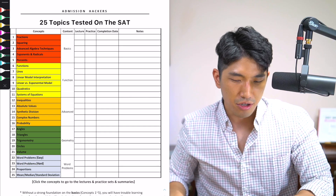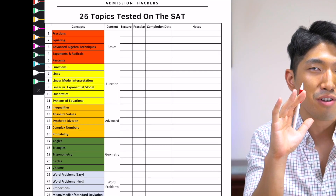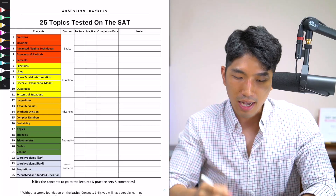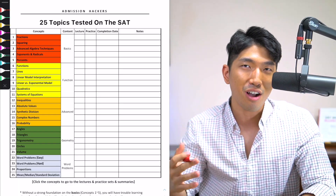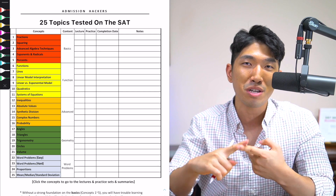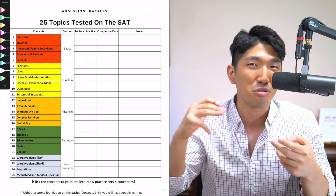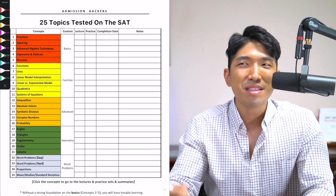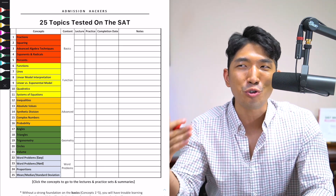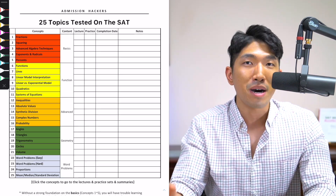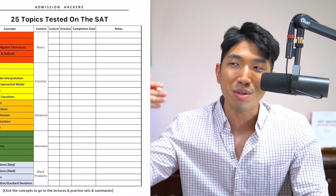When it comes to the math section, what you first have to know is that there are only 25 different concepts tested on it. As long as you know these 25 concepts, you're going to be able to answer every single question correctly and get a high score. But what most people don't know is that there is a very specific order in which you're supposed to study these concepts. Studying them out of order — like jumping to quadratics first — is exactly how you ride the bicycle uphill. Learning each concept in the right order means riding downhill: less stress, reach your target score faster.